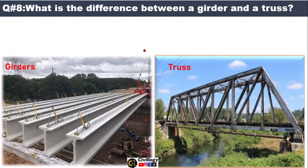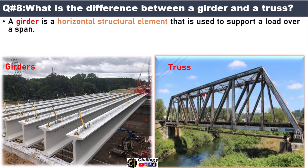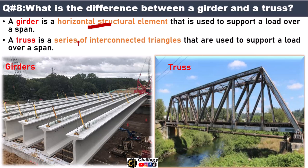Question number eight: what is the difference between a girder and a truss? A girder is a horizontal structural element that is used to support a load over a span. Whereas a truss is a series of interconnected triangles that are used to support a load over a span. The purpose of both the girder and truss is the same, but the structure of both is different.